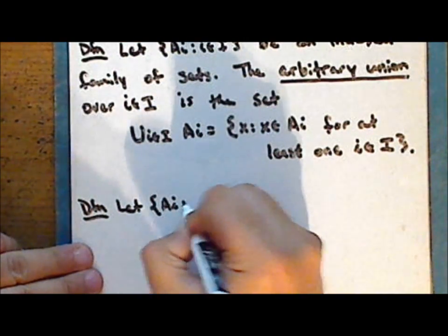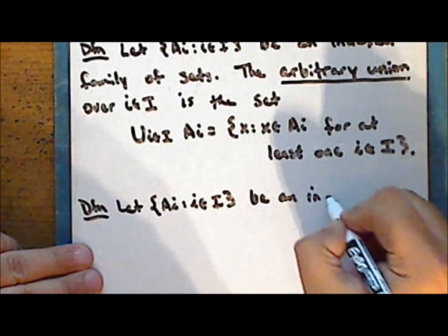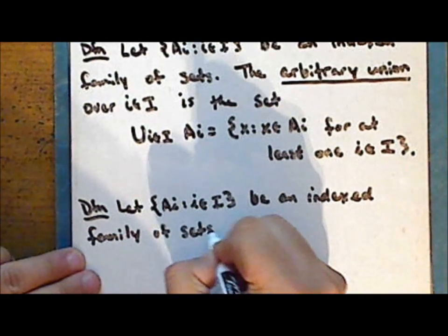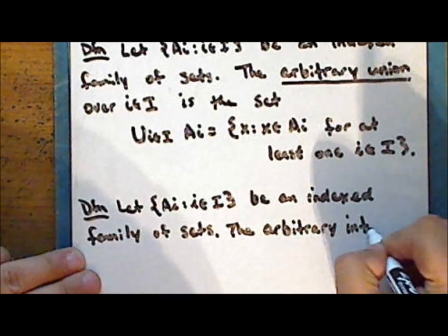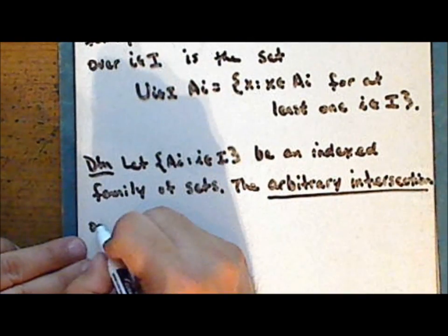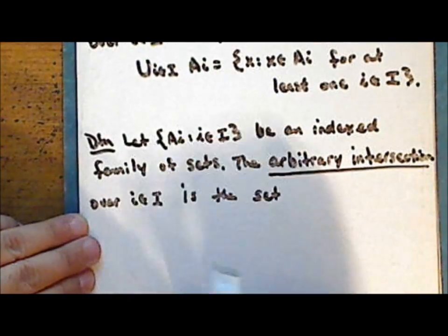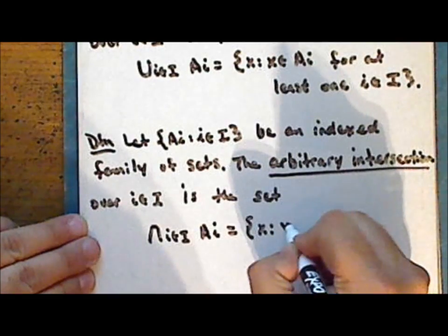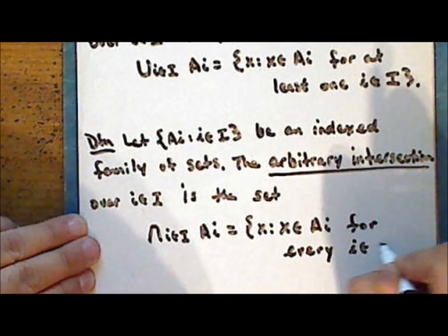Similarly, let A sub i, where i is in some indexing set, be an indexed family of sets. The arbitrary intersection over the index i is the set of those elements x such that x is in the set A sub i for every index i in the indexing set.